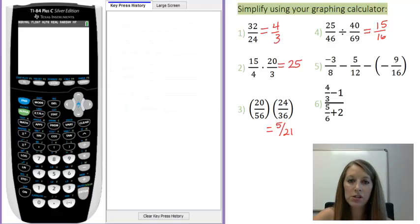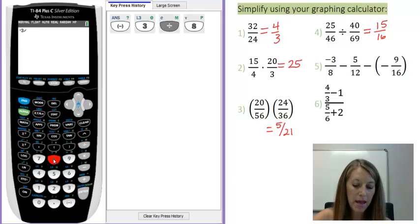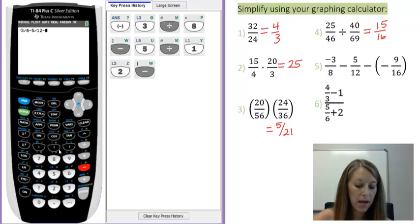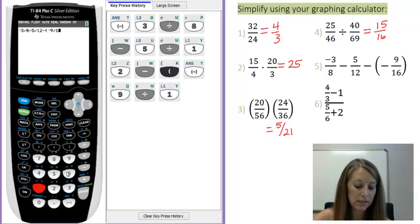Example number 5 is just to show you that your calculator understands multiple operations at once in the calculator. So let me type it in. Negative 3 divided by 8 minus 5 over 12 minus, open parentheses, a negative 9 divided by 16.